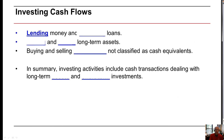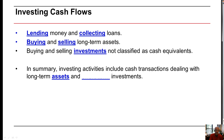Investing cash flows generally involve lending money and collecting loans, buying and selling of long-term assets like property, plant, and equipment, and buying and selling investments that are not classified as cash equivalents. Cash equivalents are those very short-term cash or near-cash items that are convertible to cash generally in 90 days or less, like a certificate of deposit. In summary, investing activities include cash transactions dealing with long-term assets and short-term investments.